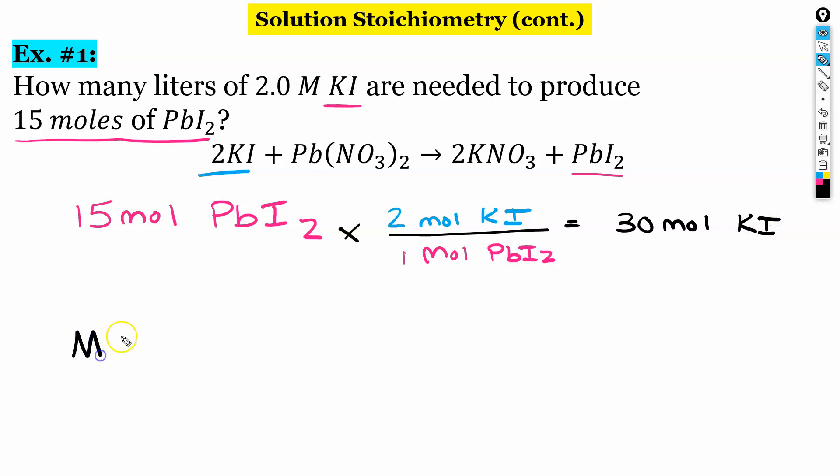Now we're going to use the molarity equation, moles over liters. So the question is asking us for liters here. So we have 2.0 molar. We know that we have 30 moles. And we're solving for liters, which is X. So when we rearrange our equation, we'll get X is equal to 30 moles divided by 2 molar. And that gets us an answer of 15 liters.